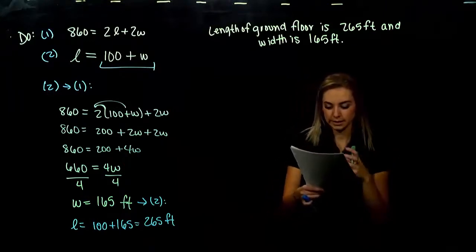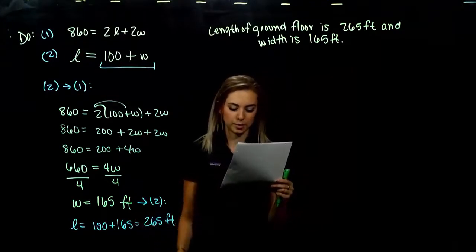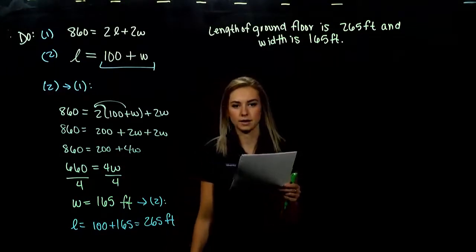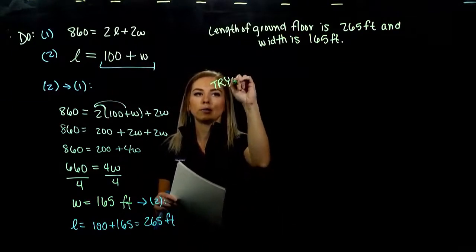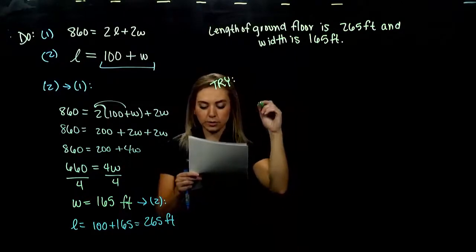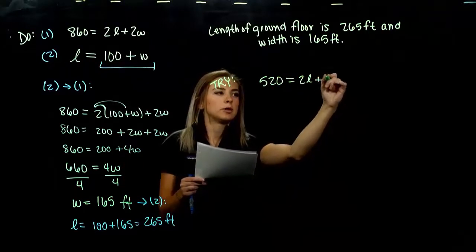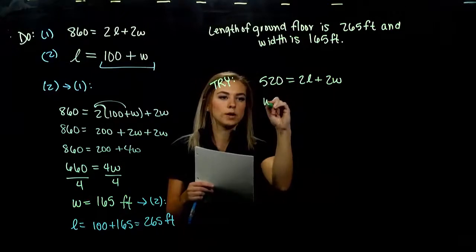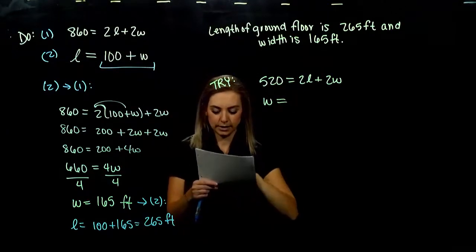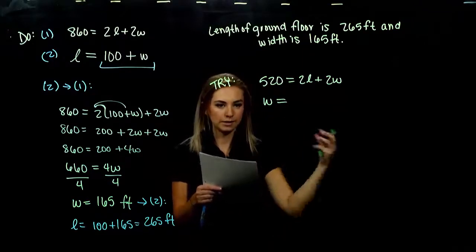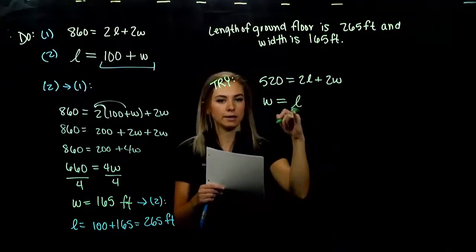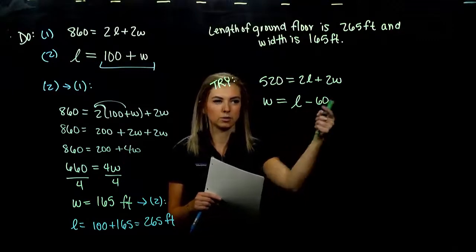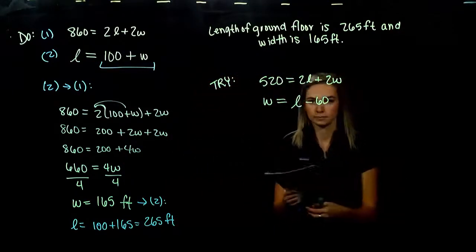We have another similar problem for the top floor of the building — still the shape of a rectangle, but its perimeter is only 520 feet. The width is 60 feet less than the length. Parsing: we know 2L plus 2W equals 520 for the perimeter equation. For the second equation: W is 60 feet less than the length, meaning we remove 60 feet from L — so W equals L minus 60. We kind of read those backward intuitively.